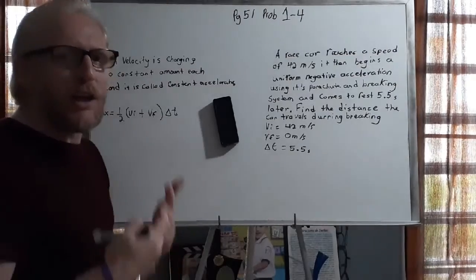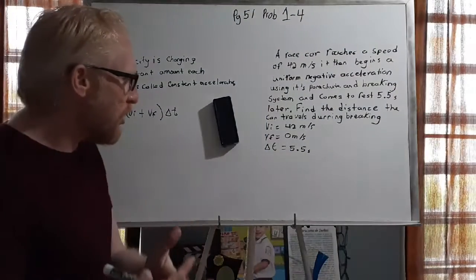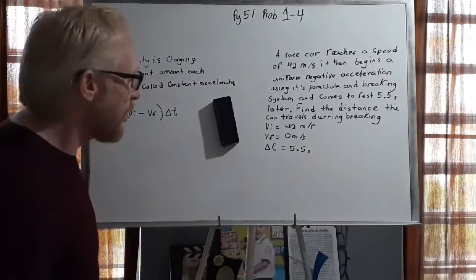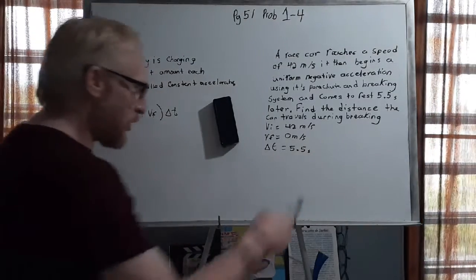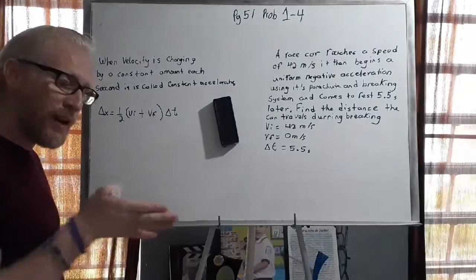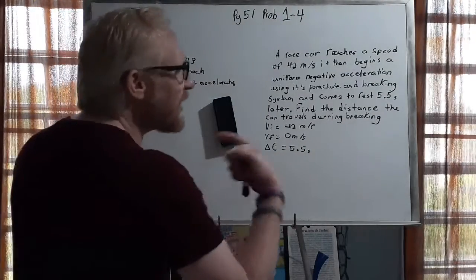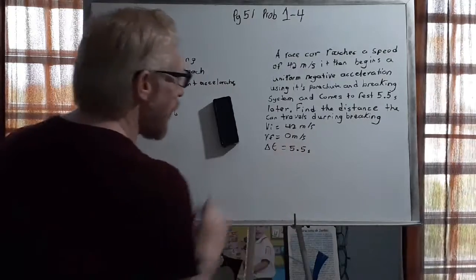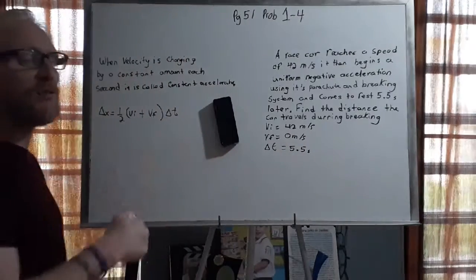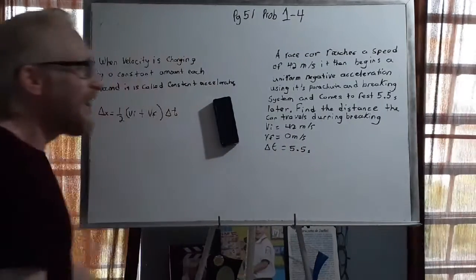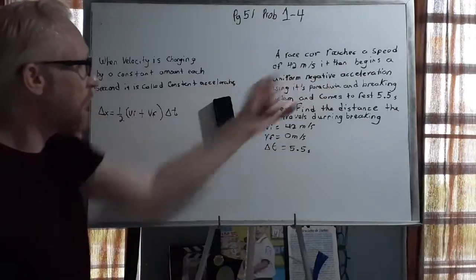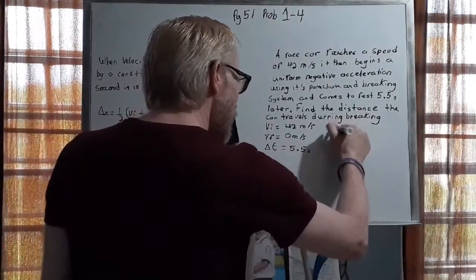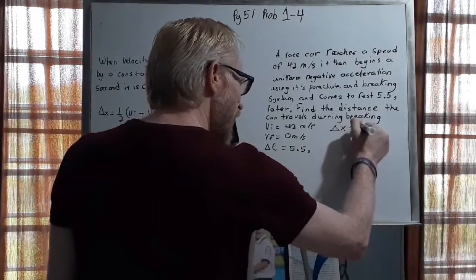So the most important thing that we need to do is always find the information that we have and write that down and then look for what the problem is asking us. So we do have the initial velocity of the car, which is 42 meters per second, that's how fast it was traveling. It says that the car comes to rest. Remember that whenever an object comes to rest or stops, that means that the velocity is zero. So in this case, the final velocity is zero meters per second. And the change in time is actually 5.5 seconds. And what they're asking us to find is the distance, so that would be our change in x.